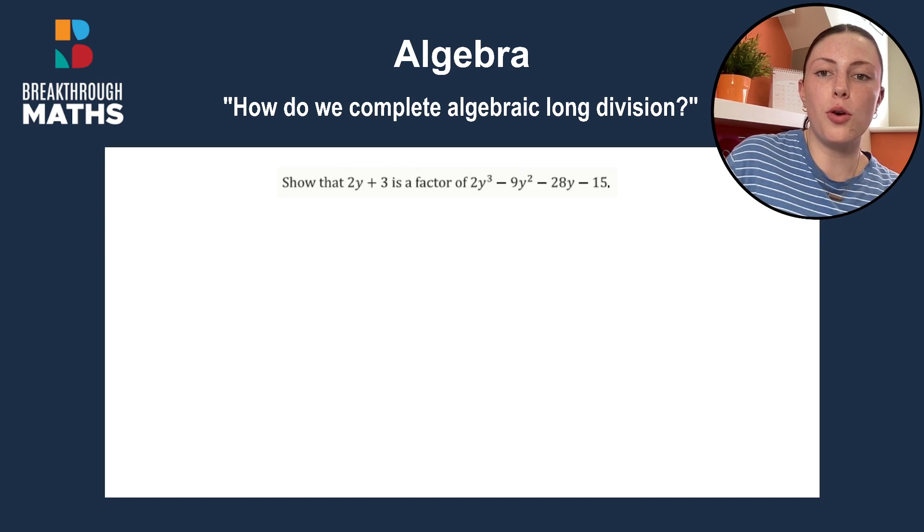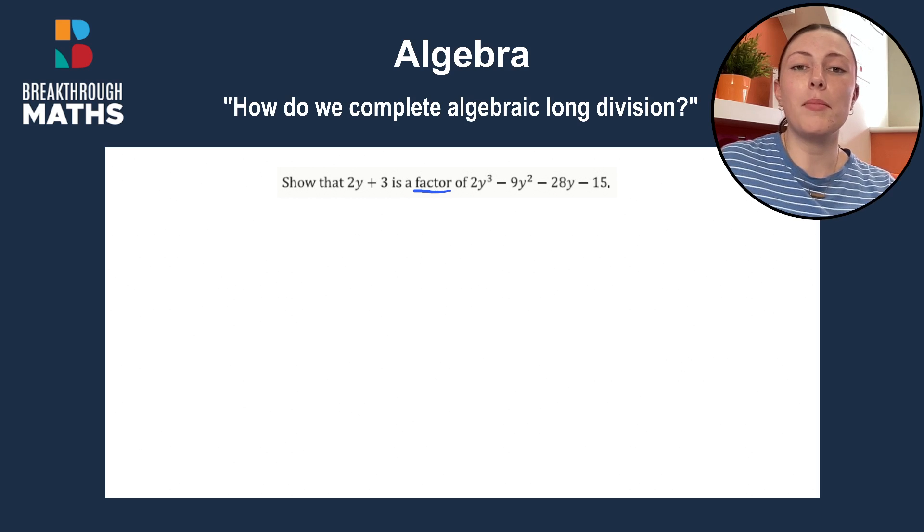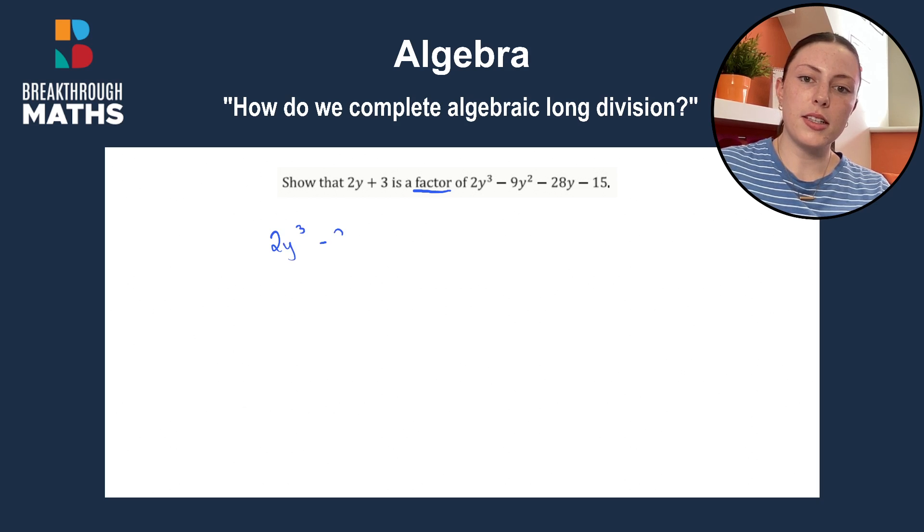So we know that we have to do algebraic long division because we're asked to show that it's a factor. If it's a factor, that means it will divide in with no remainder. So let's test this out. 2y cubed minus 9y squared minus 28y minus 15, and that's all going to be divided by 2y plus 3.